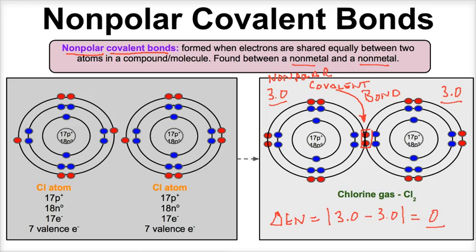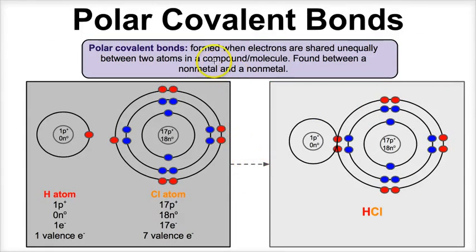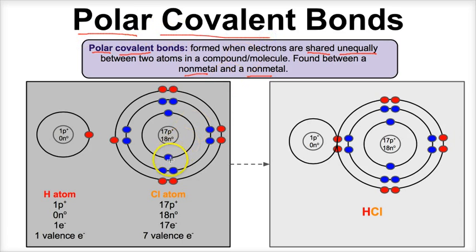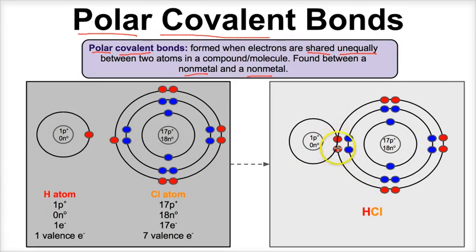Let's take a look at an example of a polar covalent bond. In a polar covalent bond, we have two atoms sharing electrons — one or more electrons — unequally. The electrons are being shared because it's covalent, but the sharing is unequal because it's polar. And again, we have a nonmetal and a nonmetal. If we take hydrogen and chlorine, hydrogen wants two valence electrons — it's one of those that wants to satisfy the duet. Chlorine wants eight valence electrons and only has seven.